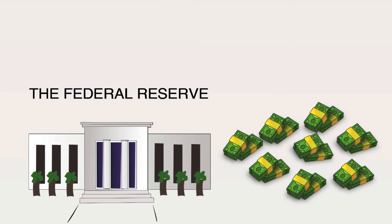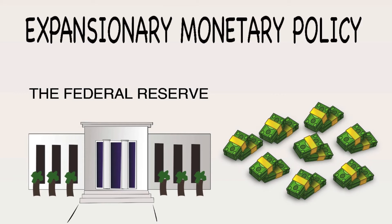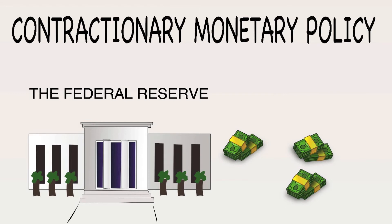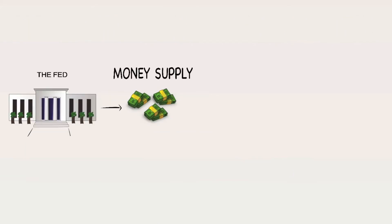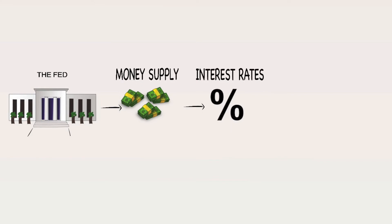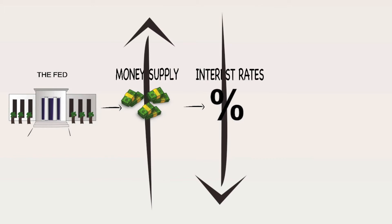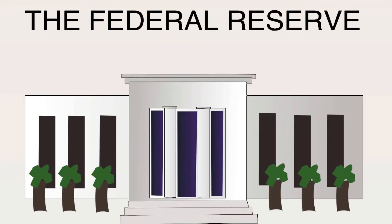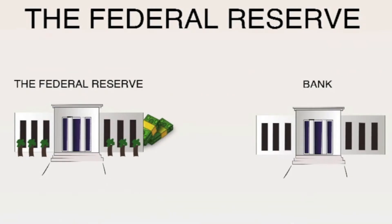The Fed can increase the amount of money in circulation — this is called expansionary monetary policy — or they can decrease the amount of money in circulation — this is called contractionary monetary policy. By controlling the money supply, the Fed can indirectly affect interest rates. If the Fed wants to lower interest rates, they can increase the money supply by putting more money into circulation.